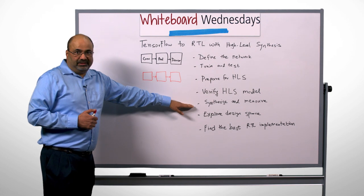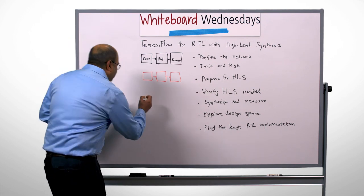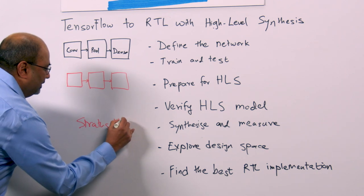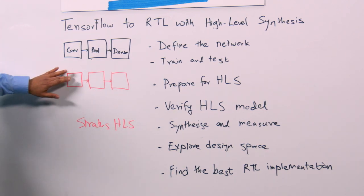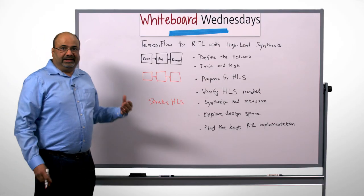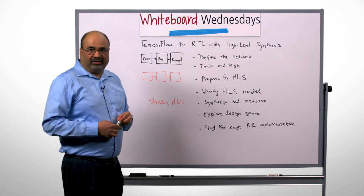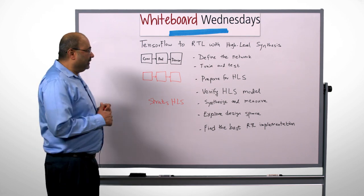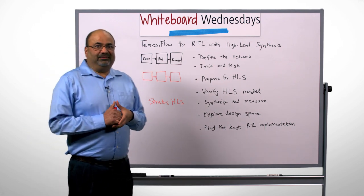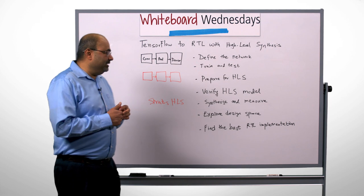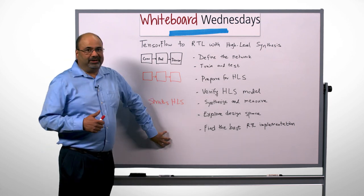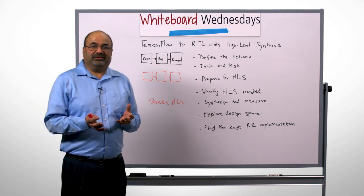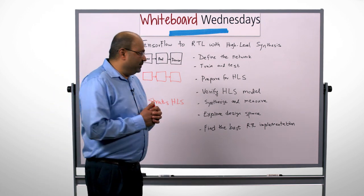you synthesize it with Stratus HLS. Stratus HLS takes your SystemC model along with technology library, clock period, and other constraints and gives you RTL very, very quickly. And because it gives you RTL very, very quickly, you can actually create multiple RTL implementations from the same source code using different constraints — so you can explore the design space.